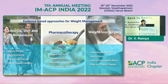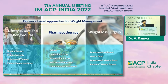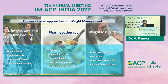Coming to the evidence-based approach for weight management: first is lifestyle modification — dietary therapy, physical activity, and behavioral therapy. Then pharmacotherapy, including orlistat, liraglutide, injectable semaglutide, naltrexone, and phentermine. For weight loss with surgery — laparoscopic adjusted gastric banding and Roux-en-Y — we consider these for morbid obesity with BMI more than 45.